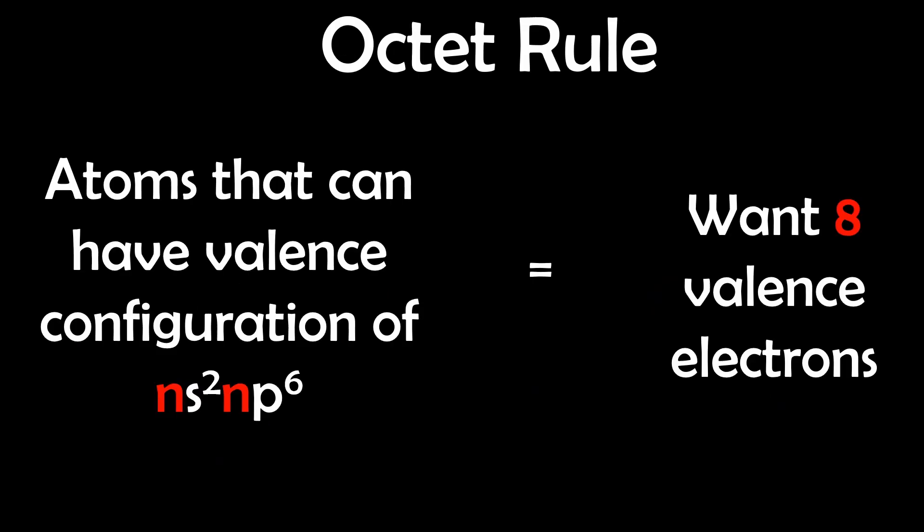The octet rule states that atoms that can achieve a valence configuration of ns2, np6, tend to bond in such a way that they can achieve 8 valence electrons, creating a stable outer shell.